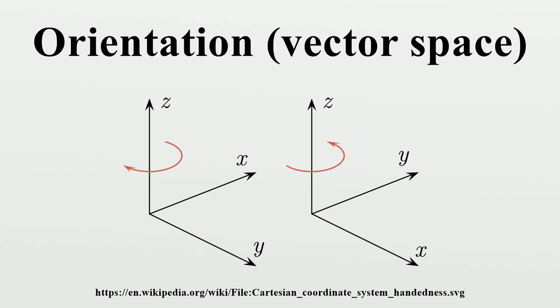Every ordered basis lives in one equivalence class or another. Thus any choice of a privileged ordered basis for V determines an orientation. The orientation class of the privileged basis is declared to be positive.